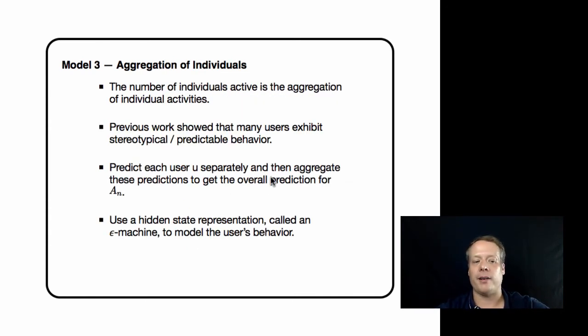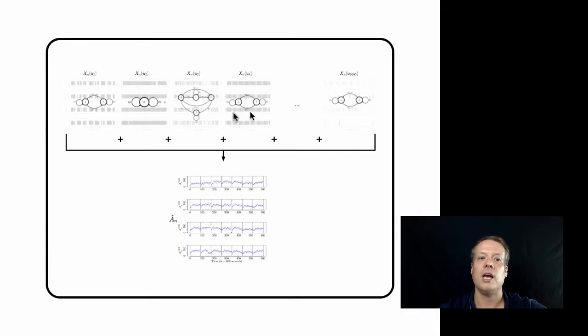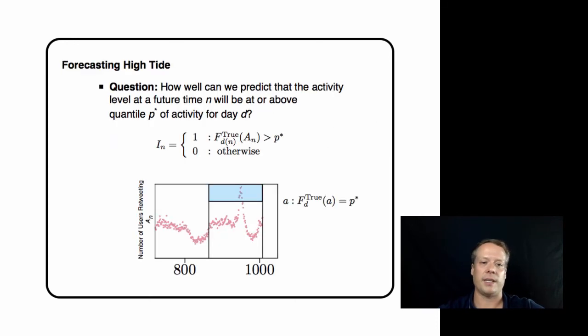So the aggregation of individuals model is very simple. We take those Epsilon machines, those causal state models that we've created for each of the different users, and we look at what state they're currently in. What state they're currently in tells us what the probability of them tweeting in the near future is. Then we can aggregate those probabilities, and aggregating across all the probabilities gives us the expected number of tweets to see in the near future. If we have two users that are 50% likely to tweet in the next time period, then we add them together and we're expecting to see one tweet, because that's the expected number of tweets that we would see in that space.